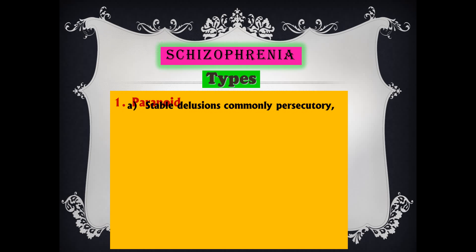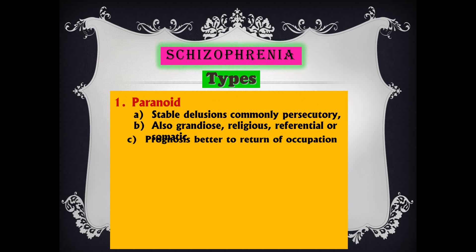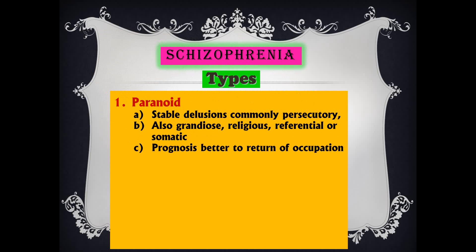The types of schizophrenia: paranoid type has a stable, constant delusion — commonly persecutory ('somebody is following me'), also grandiose, religious, referential, or somatic. Fortunately prognosis is better here because after recovery they return to occupation. Hebephrenic type shows the highest deterioration with rapid progression — deterioration in personality, with mannerisms, grimaces, giggling, and laughing for no reason.